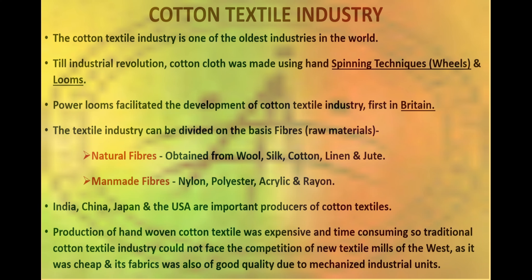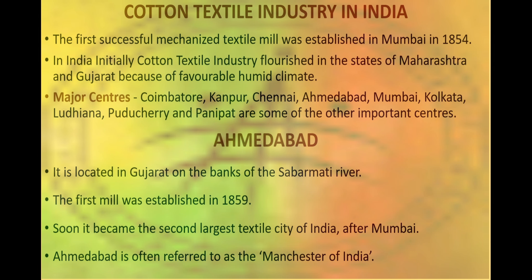India, China, Japan, and USA are important producers of cotton textile. In India, the first mechanized textile mill was established in Mumbai in 1854. Initially, the industry was established in Maharashtra and in Gujarat. Major centers are Coimbatore, Kanpur, Chennai, Mumbai, Kolkata, Ludhiana, and Ahmedabad.